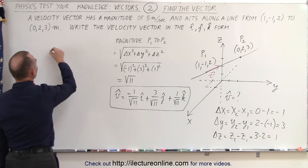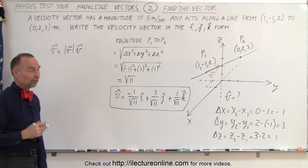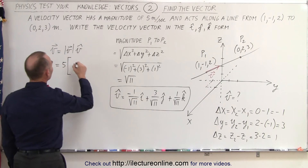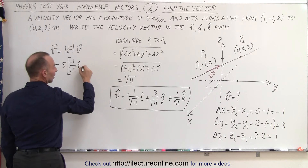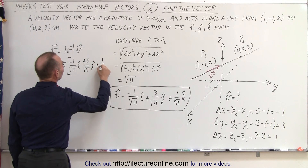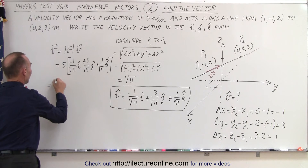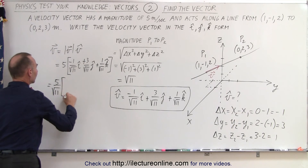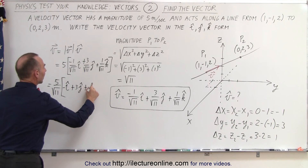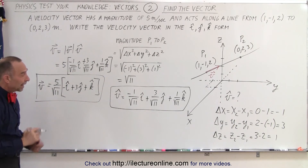Now if we want to find vector v, it is simply equal to the magnitude of v times the unit vector v. So we take the magnitude — five — multiplying times the unit vector v, which is negative one over the square root of eleven in the i direction, plus three over the square root of eleven in the j direction, plus one over the square root of eleven in the k direction. Factoring out one over the square root of eleven, this becomes five divided by the square root of eleven, times the quantity negative i plus three j plus one k. And that is the velocity vector expressed in terms of i, j, k.